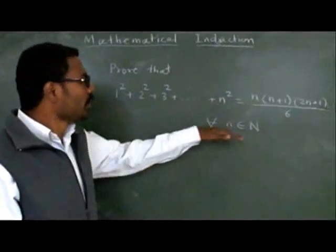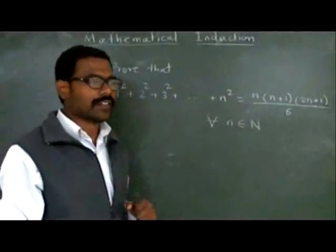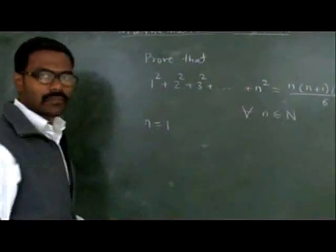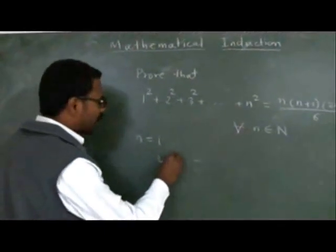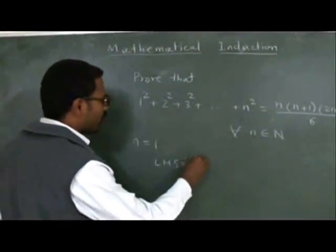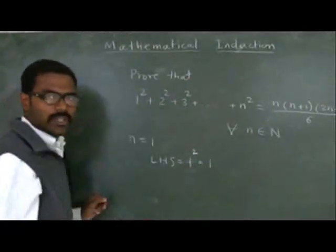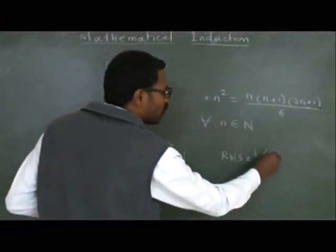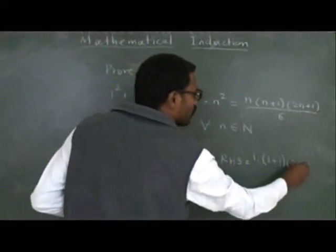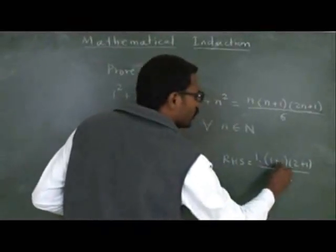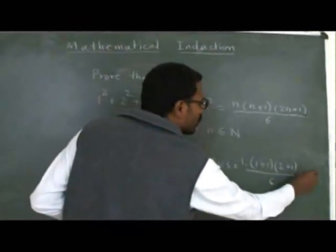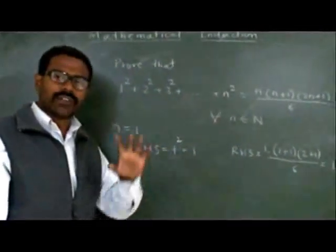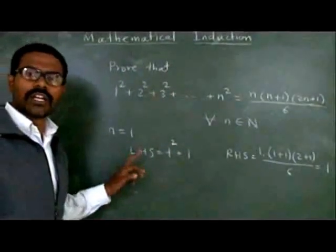How can we prove this? Let's think — what if n is equal to 1? If n equals 1, on the LHS we have only 1 squared, which equals 1. On the RHS, substituting n=1, we get 1 × (1+1) × (2×1+1) / 6 = 1 × 2 × 3 / 6 = 6/6 = 1. So LHS equals RHS, and this formula holds for n equals 1.